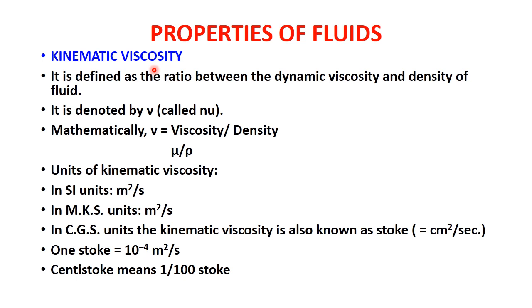Kinematic viscosity is defined as the ratio between dynamic viscosity and density of fluid, denoted by the Greek letter nu (ν). So nu = mu / rho. The SI and MKS unit is m²/s. In CGS units, kinematic viscosity is measured in stokes, where 1 stoke = 1 cm²/s = 10⁻⁴ m²/s, and 1 centistoke = 10⁻² stokes.